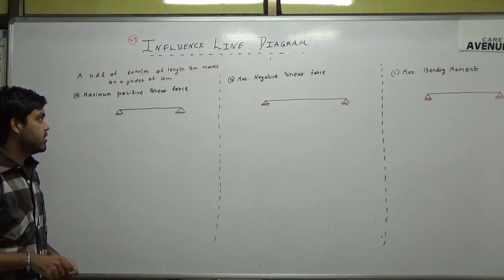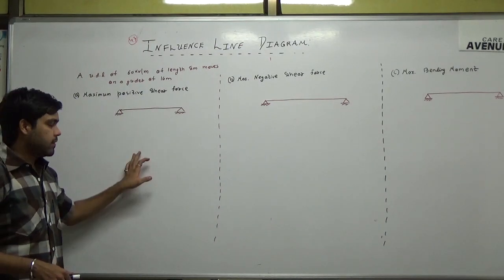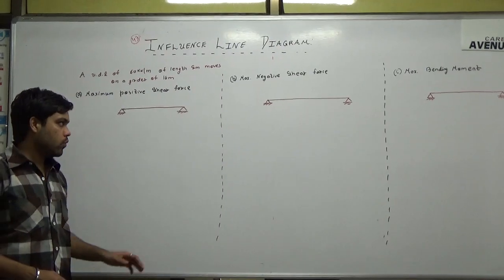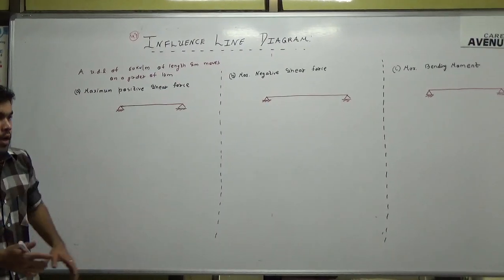This is the next lecture on influence line diagrams. We are now going to see rolling UDL — uniformly distributed loads that move along a structure.